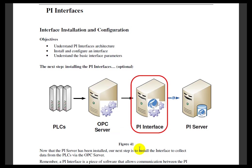We typically run this Interface on its own computer, and when we do that, we tend to call that computer an Interface Node, or sometimes a Data Acquisition Node. Historically, we've called them API Nodes, and the older VMS versions were called PI Net Nodes, so you might run into those terms in older documentation.